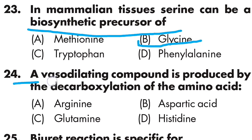Question number twenty-four: a vasodilating compound is produced by the decarboxylation of which amino acid? Option A is arginine, Option B is aspartic acid, Option C is glutamine, Option D is histidine. Histidine is the correct answer — histidine is decarboxylated to produce histamine, a vasodilating compound.